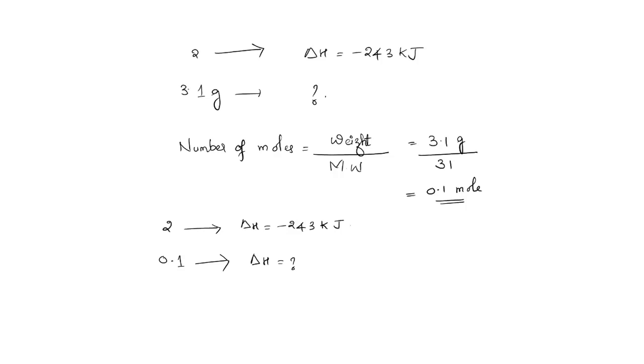Let it be the first equation and this is second equation. So let's divide these two. 2 divided by 0.1 is equal to -243 divided by what will be the ΔH.